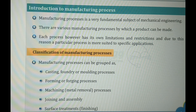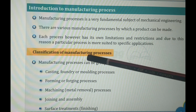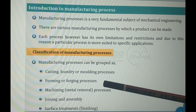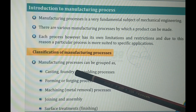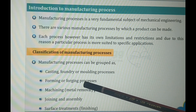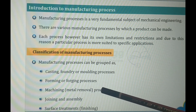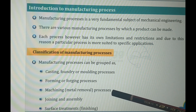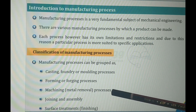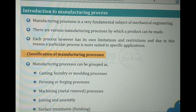In the classification of manufacturing processes, manufacturing processes can be grouped under the following categories: casting and foundry or molding processes, forming or forging processes, machining processes also called metal removal processes, joining and assembly processes, and surface treatment processes.